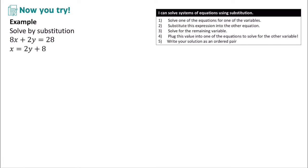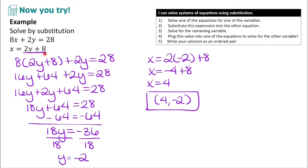Pause the video and try solving the next system by substitution on your own. In this problem, the second equation is already solved for x. Plug 2y plus 8 into the first equation, distribute, combine like terms, and you get 18y plus 64 equals 28. Solve for y to get y equals negative 2, then substitute back to find x equals 4. The solution is (4, negative 2).